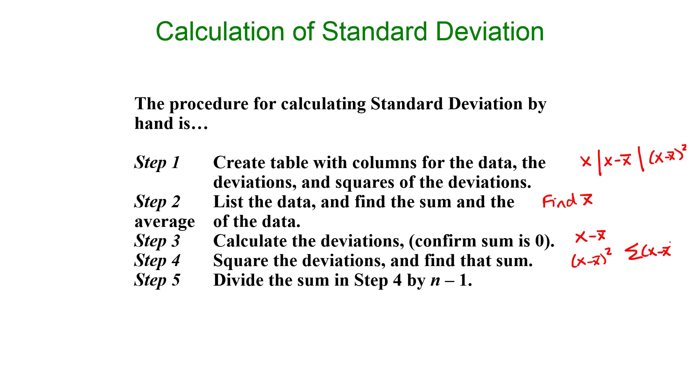Now you're gonna take the sum that you just found and divide it by n minus 1 if this is sample data. Or divide it by n if it's not. Usually it's sample. And what you just found is S squared, the variance. Now you take the square root of that and you get the standard deviation.